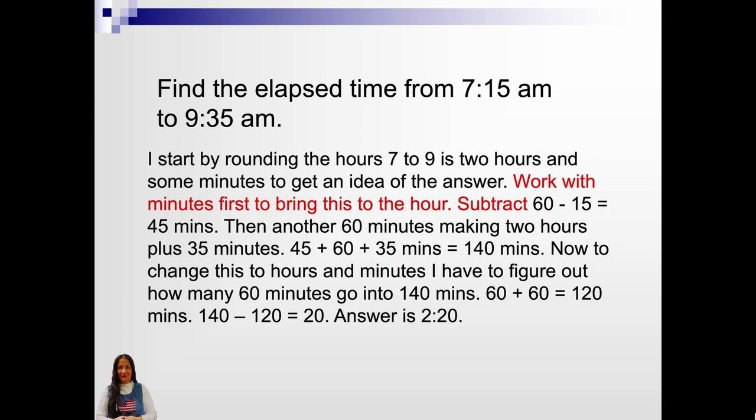Find the elapsed time from 7:15 a.m. to 9:35 a.m. I start by rounding the hours to 7 to 9 to get an idea of the answer. Work with minutes first to bring this to the hour. Subtract 60 minus 15 equals 45 minutes. Then another 60 minutes making 2 hours plus 35. So, 45 plus 60 plus 35 minutes equals 140 minutes.